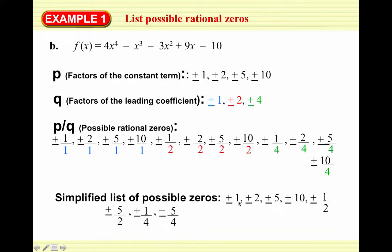If there is a rational zero for this polynomial function, then one or more of these values must be it — it can't be something else. So plus or minus 6 would not work, plus or minus 2/3 would not work. Any rational value not listed is not even a candidate.